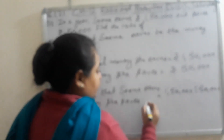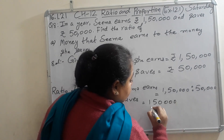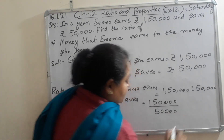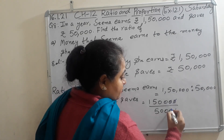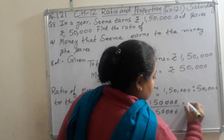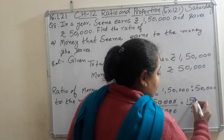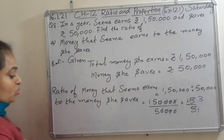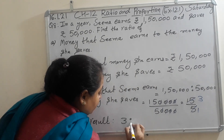So, do the cancellation. After this, you will get 15 over 5. Further cancellation is possible in the table of 5. 5 ones are 5, 5 threes are 15. So, in the result, you will write 3 ratio 1.